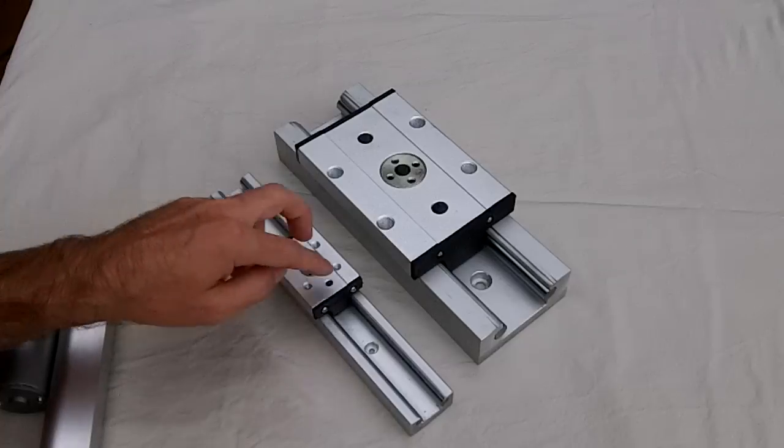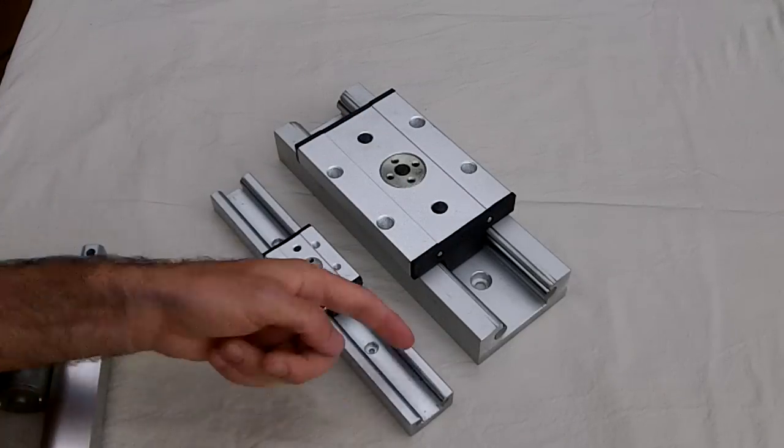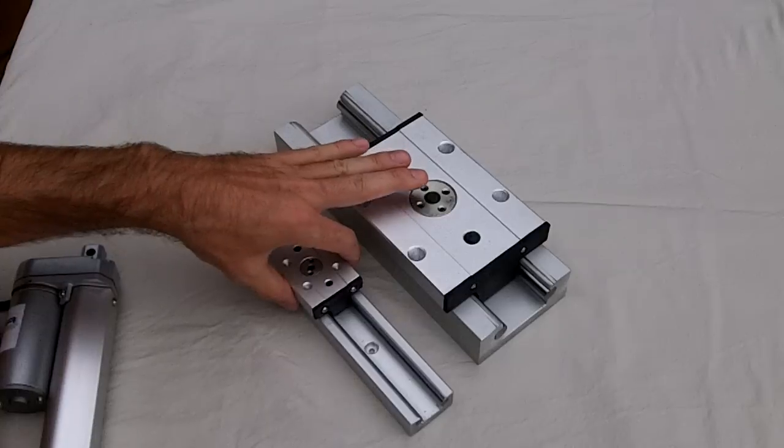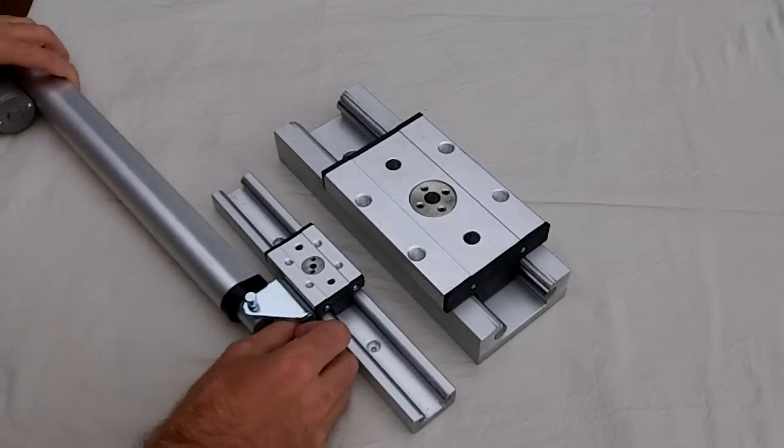The carriages themselves come with tapped holes already to attach something to, and you'll notice that it overhangs slightly on either side. That's deliberate, and that's in case you want to drive these things with perhaps an actuator.